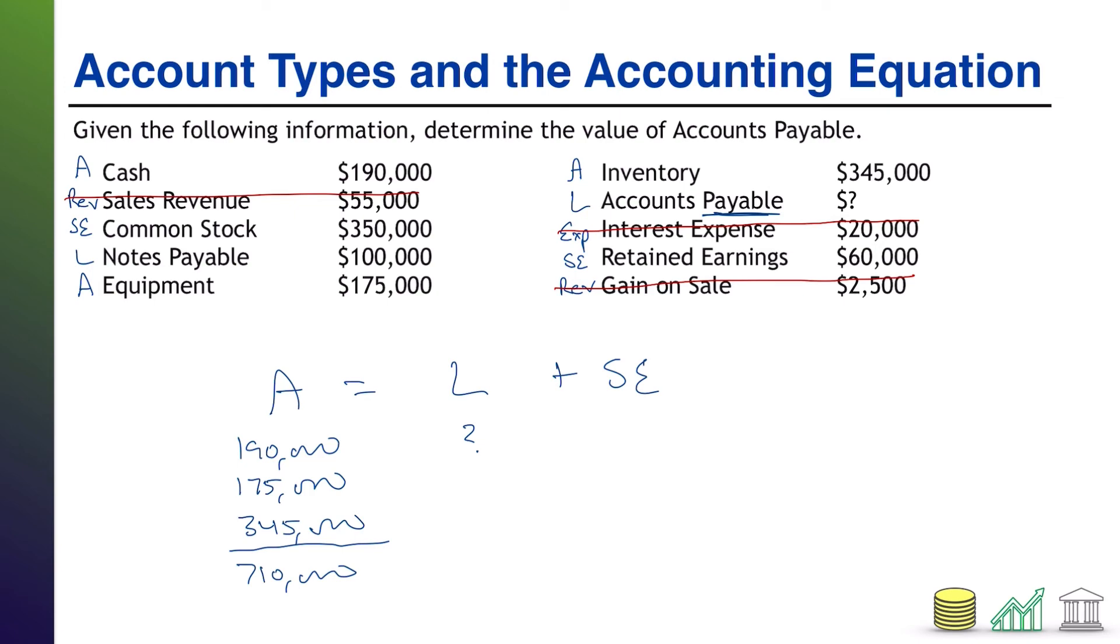Under liabilities, we have 100,000 for the notes payable. And of course, we have our question mark that we're trying to solve for. So this totals up to 100,000 plus question mark because we don't know what that question mark is yet. And then we have shareholders equity. And under shareholders equity, we only have two items. We have the common stock at $350,000. And then we have the retained earnings at $60,000. And those total up to be $410,000.